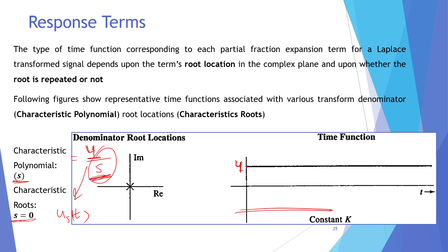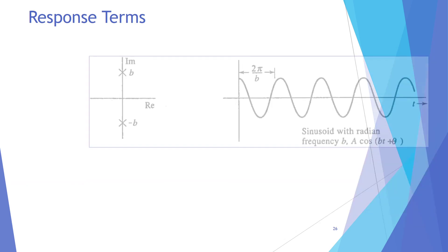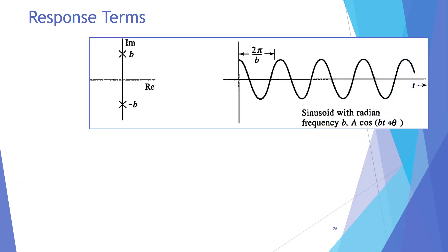The poles of the Laplace transform represent what the shape of the time function will be. The numerator will only contribute to the magnitude of the transform. Now let's have a look at another case.